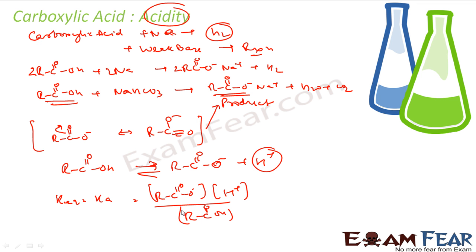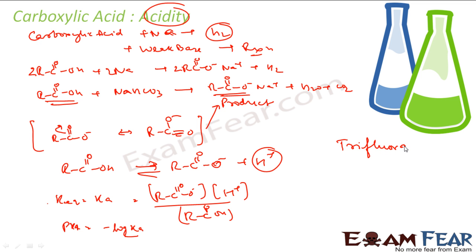The industry standard to measure acidity is pKa, which is nothing but minus log of Ka. The strongest organic acid is trifluoroacetic acid, and it has a pKa of 0.23.